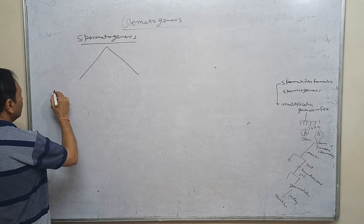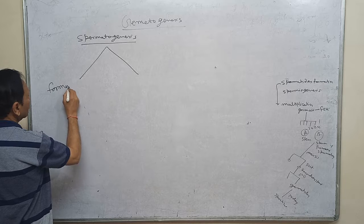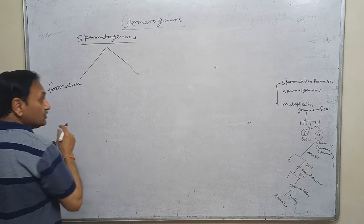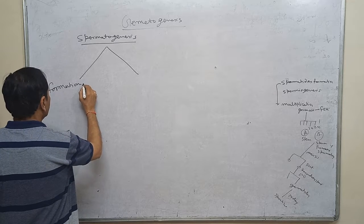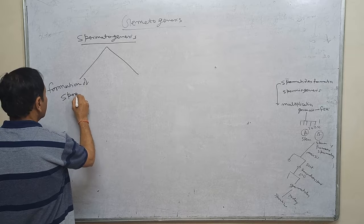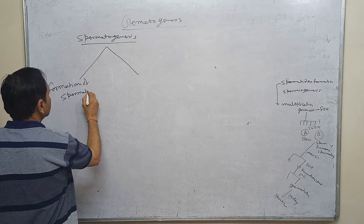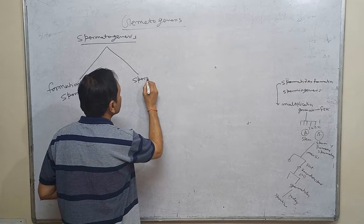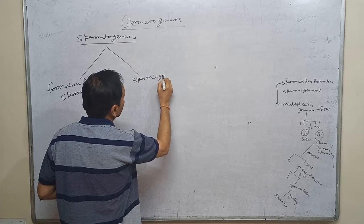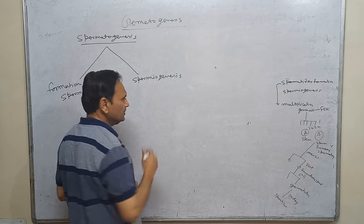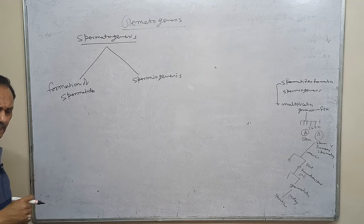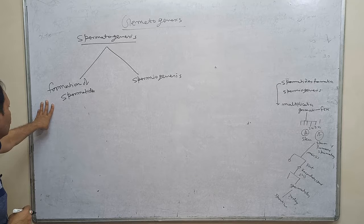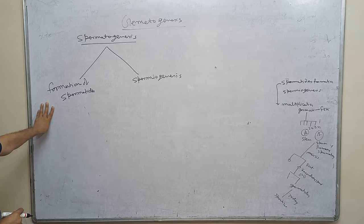We will discuss spermatogenesis in two phases. One is called formation of spermatids, and secondly that is called spermiogenesis. We will discuss spermiation also later on, but here we will focus on two: formation of spermatids and spermiogenesis.